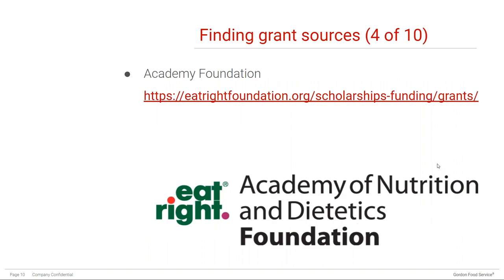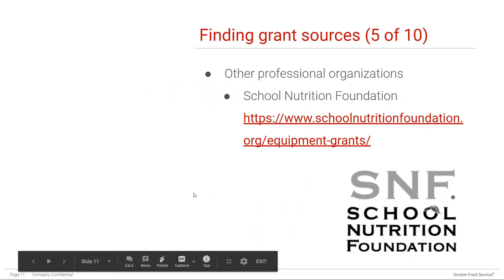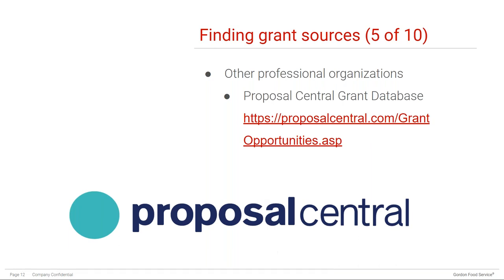Other professional organizations are also sources of grant funding. One example is the School Nutrition Foundation. The ProposalCentral grant database provides an alphabetical list of professional organizations and foundations which fund grants.